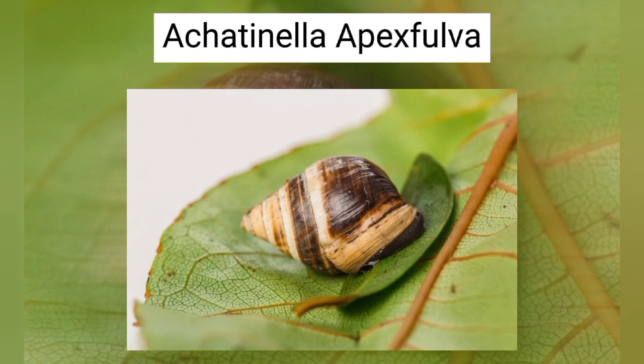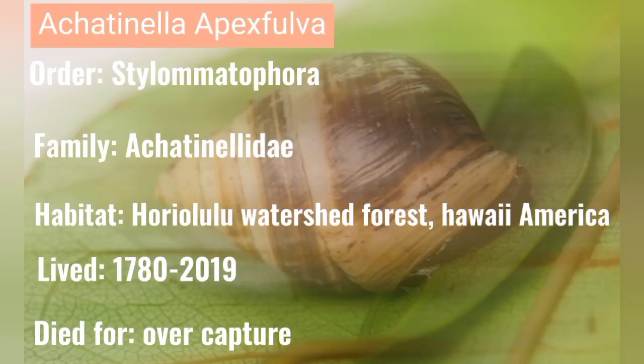Acatenella apex vulva — order: Stylommatophora, family: Achatinellidae. Habitat: Horeololo watershed forest, Hawaii, America. Lived from 1780 to 2019. Died due to over-capture.